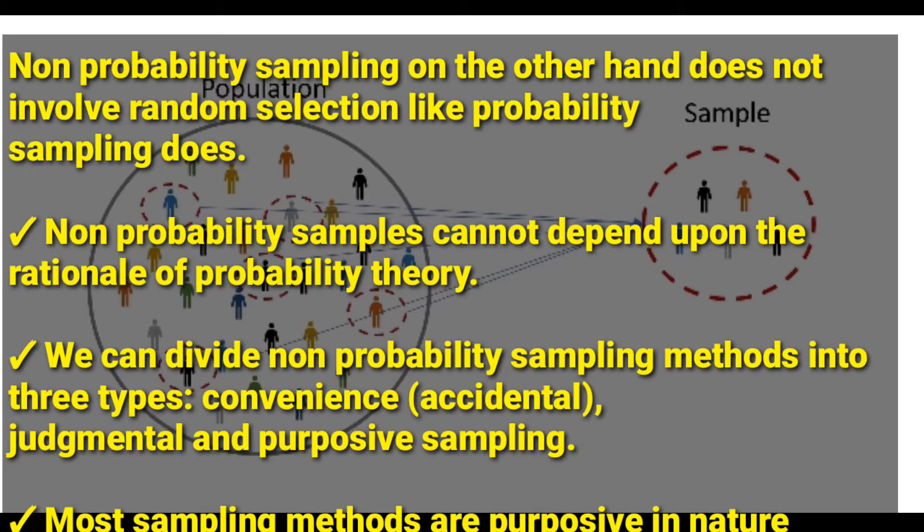We can divide non-probability sampling methods into three types: convenience, also known as accidental, then judgmental, and purposive sampling. Those are the three types of non-probability sampling techniques.